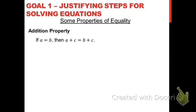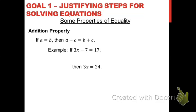In other words, if you take an equation and add the same thing to both sides, the expressions on either side will still be equal to one another. For example, if you have the equation 3x minus 7 equals 17, you would cancel out the minus 7 by adding 7 to both sides, giving you 3x equals 24. The addition property of equality guarantees that when you add the same thing to both sides, the two new expressions are equal.